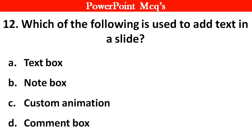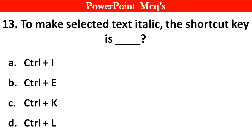Question no. 12: Which of the following is used to add text in a slide? Options: A. Textbox, B. Notebox, C. Custom Animations, D. Comment Box. The right answer is option A: Textbox. Question no. 13: To make selected text italic, the shortcut key is dash. The right answer is option A: Control plus I.